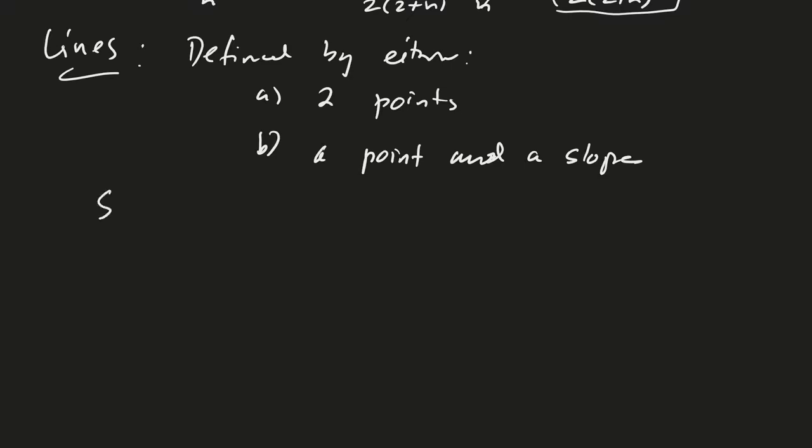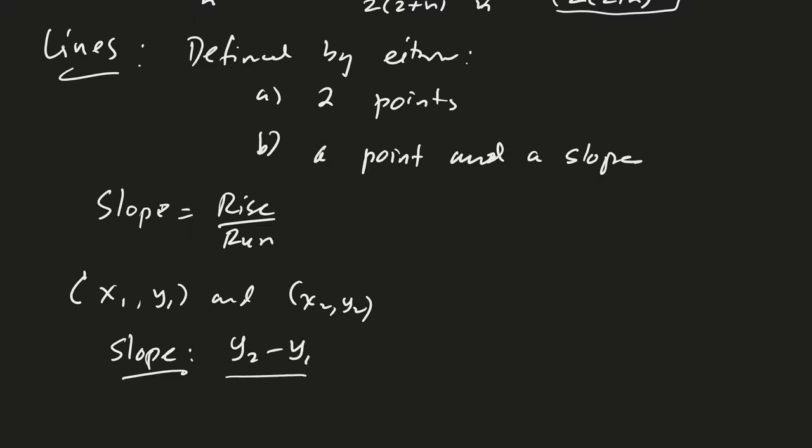So we'll remember that the slope is rise over run. And so if we have, if the line goes through, let's take two points, x1, y1, and x2, y2. Then the slope of the line between those two points would be the change in y, which would be y2 minus y1, and then divided by the change in x, which is x2 minus x1.